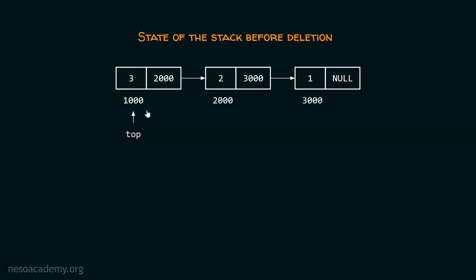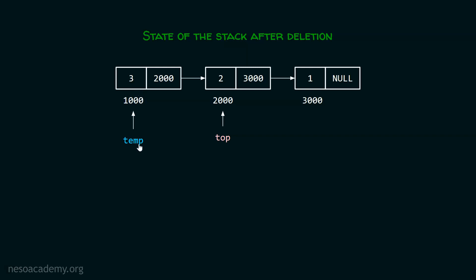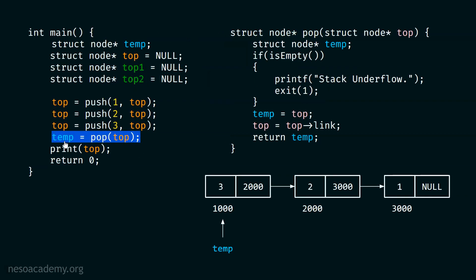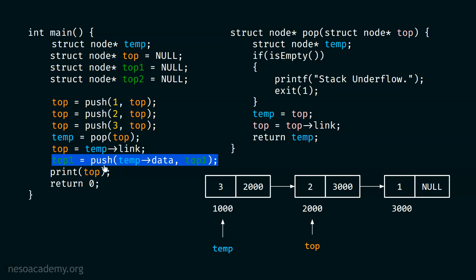This is the state of the stack before deletion — top pointer is currently pointing to the first node. After calling the pop function, the state of the stack changes: top pointer points to the second node and temp pointer points to the first node. Using temp, we return the address of the first node to the caller. Then we assign temp->link to top, so when temp->link is 2000, top is now updated to address 2000. Now we can easily call the push function to push this element onto temporary stack 1, and we must receive the address of the first node of temporary stack 1 and save it inside top 1 pointer.